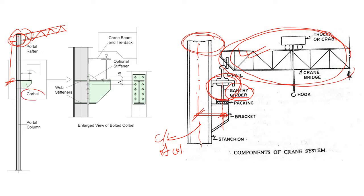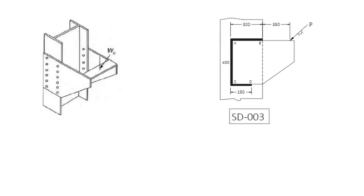To provide support for this eccentric load, you need to provide a corbel or bracket. This bracket is supported by an arrangement of bolts, though you can also use welds to connect the bracket to the column. This is the first typical type of bracket connection. Another case is when you have a point load over a column that needs to be supported through the flanges of the column.